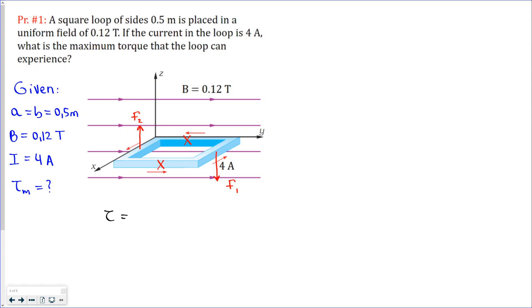It is number of turns multiplied by the current through the loop and magnetic field strength, area, and sine alpha. Maximum torque can be when sine alpha is equal to 1 or alpha is equal to 90 degrees. Then the equation for the maximum torque will be as follows: N I B A. We know that the number of turns here is one.